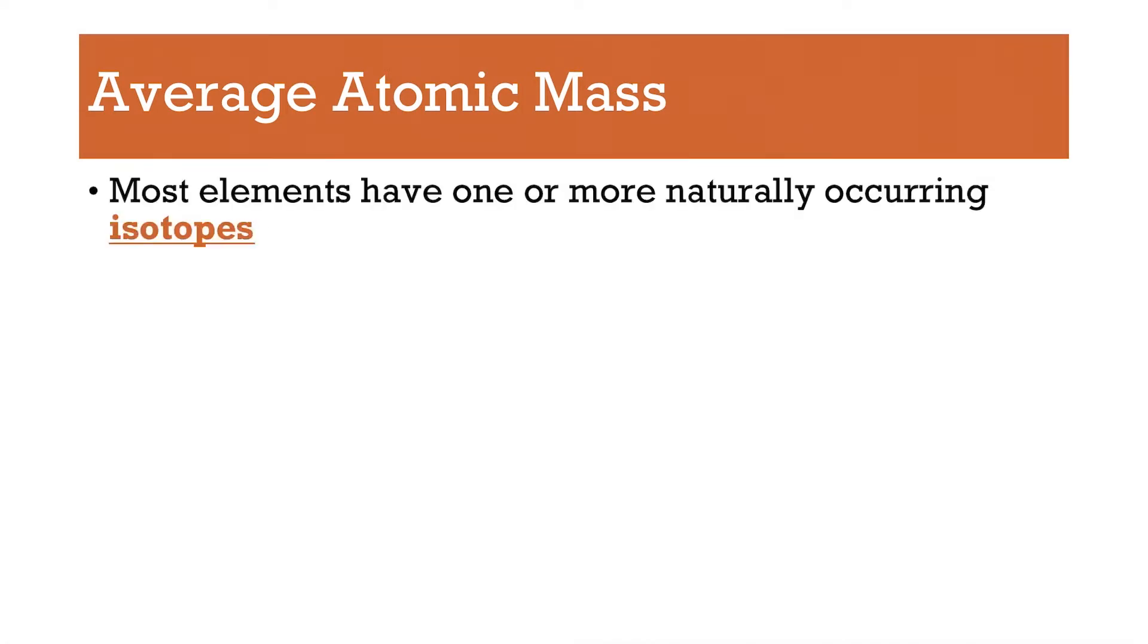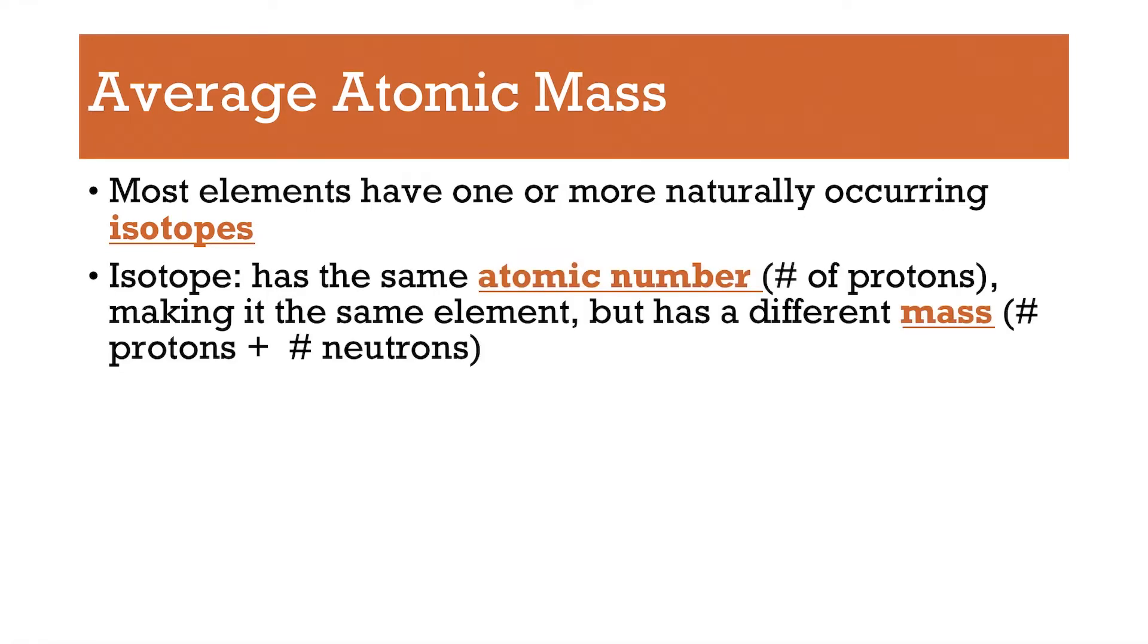Average atomic mass. Most elements have one or more naturally occurring isotopes, and if you recall from the other day, isotopes are the same element, so they have the same atomic number, so the same number of protons, but it's a different mass, meaning the number of protons and neutrons is different.